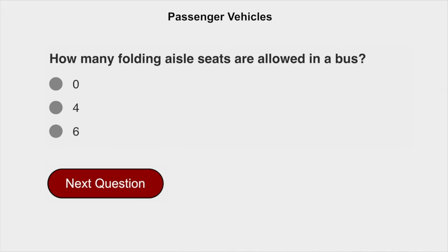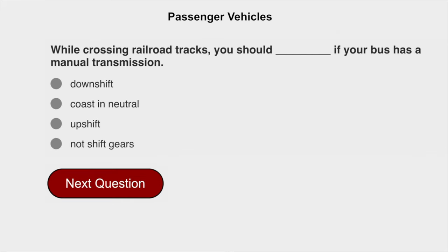How many folding aisle seats are allowed in a bus? Zero. While crossing railroad tracks, you should not shift gears if your bus has a manual transmission.